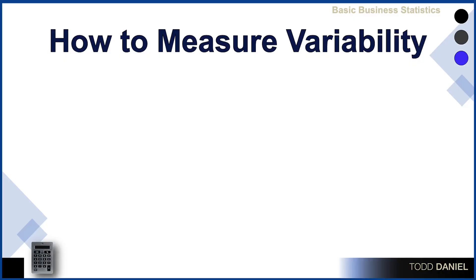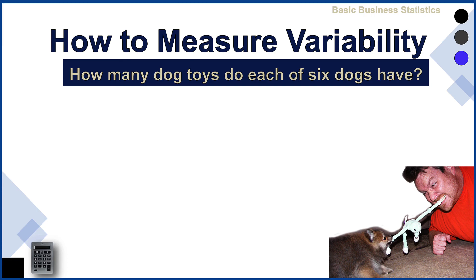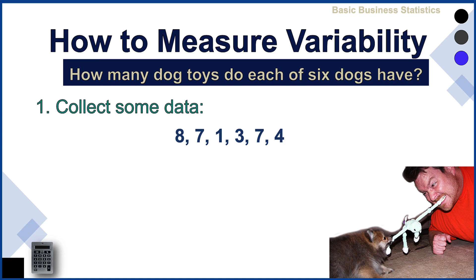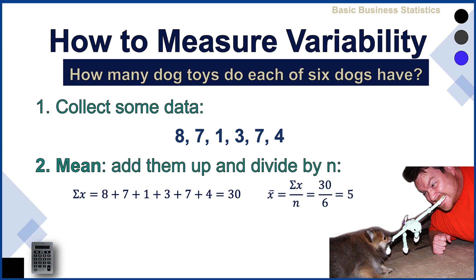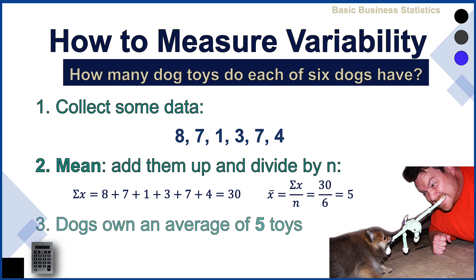For this example, we need some data. We're going to ask six dogs how many toys do you own? The data that we collect — eight, seven, one, three, seven, four — can be added up and divided by n to calculate a mean. The values add up to 30, there are six dogs, giving us an average of five. These dogs own an average of five toys.